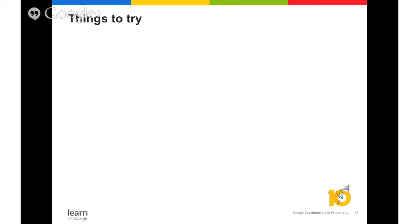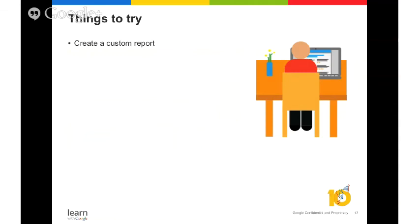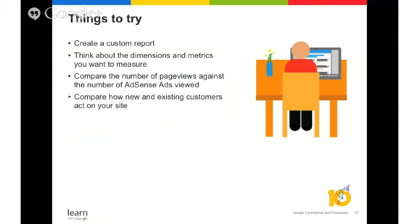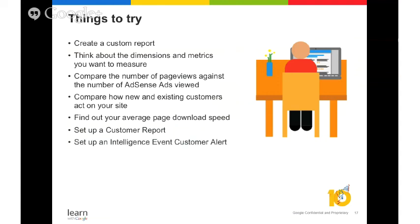As you think about how Google Analytics can help you become an AdSense expert, here are a few things to try: create a custom report and think about the dimensions and metrics you want to measure; compare the number of page views against the number of AdSense ads viewed; compare how new and existing users act on your site; find out your average page download speed; set up a custom report; and set up an intelligence event custom alert.